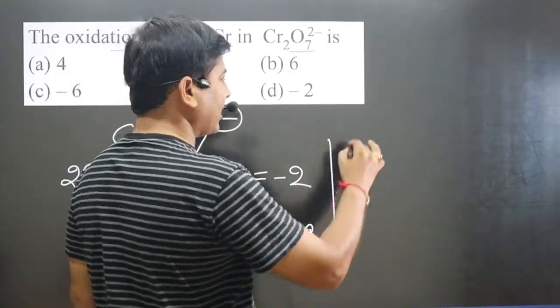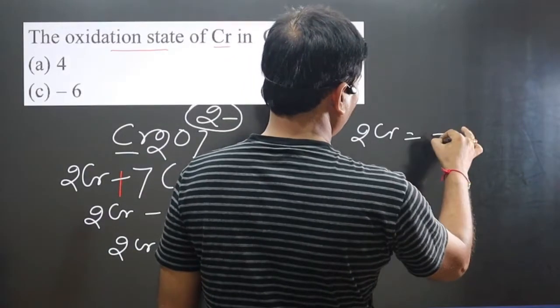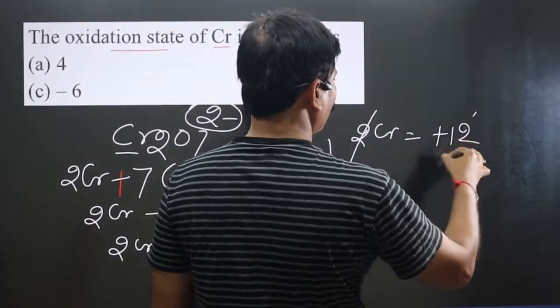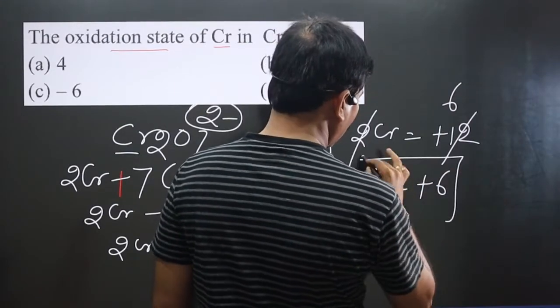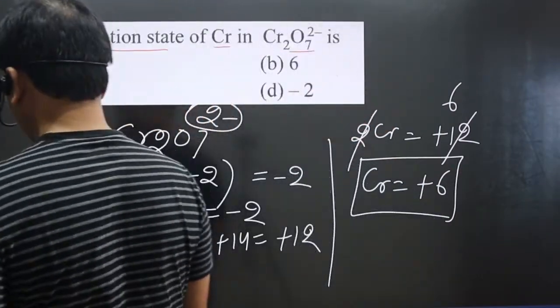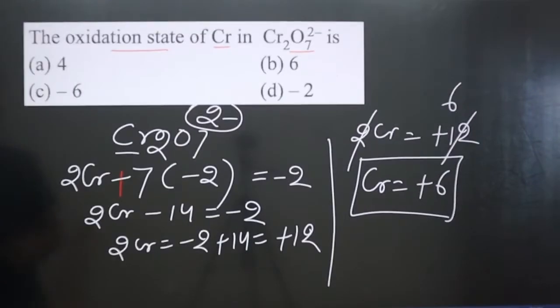2Cr = +12, so 1Cr = +6. Cr is present in +6 oxidation number. The correct option is B.